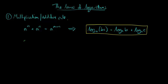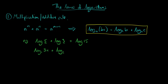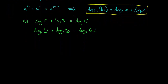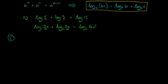It doesn't matter what the base is, as long as it's the same base all the way through. For example, log of 5 plus log of 3 — we just multiply the 5 and the 3 — can be rewritten as log of 15. Another example: log base 2 of 3x plus log base 2 of 2x. We multiply the two things to get a single logarithm: 3x times 2x is 6x squared. This rule can also be used in reverse to split a single logarithm into two.